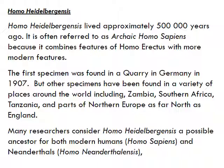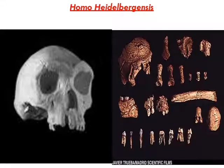Homo heidelbergensis lived approximately 500,000 years ago. It is often referred to as archaic Homo sapiens because it combines features of Homo erectus with more modern features. The first specimen was found in a quarry in Germany in 1907, but other specimens have been found in Zambia, South Africa, Tanzania, and parts of northern Europe as far as northern England. Many researchers consider Homo heidelbergensis a possible ancestor for both modern humans and Neanderthals.